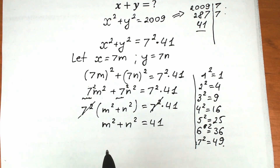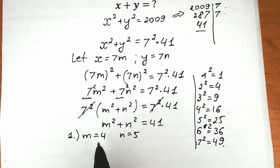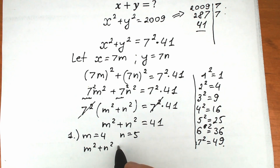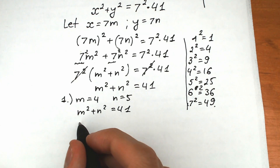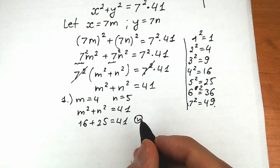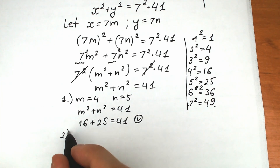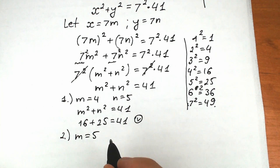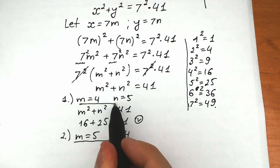The first case is m = 4 and n = 5, because m² + n² = 16 + 25 = 41. Because of the addition, there is also a second interpretation: m = 5 and n = 4. It changes nothing since we're adding. So we have two valid interpretations.